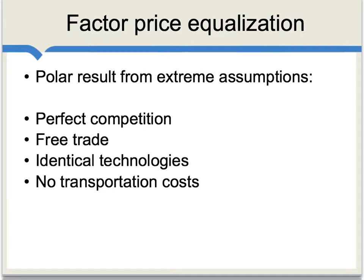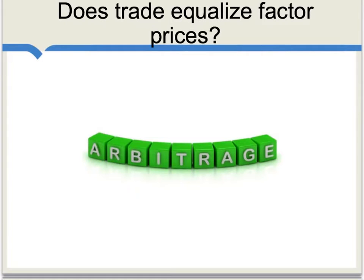In any case, the extreme result of true factor-price equalization is a polar result based on some extreme assumptions. Imagine you have perfect competition, free trade, identical technologies around the globe, and no transportation costs. If wages were lower in China, you would invest in China, build the goods and services there, and ship them to the United States until wages in the two countries were exactly equal. In this setting, trade really is managing to equalize factor prices through a mechanism of arbitrage.